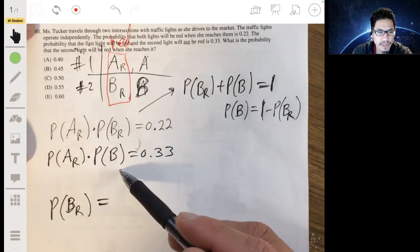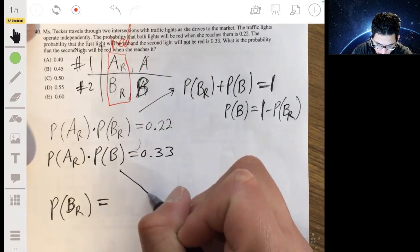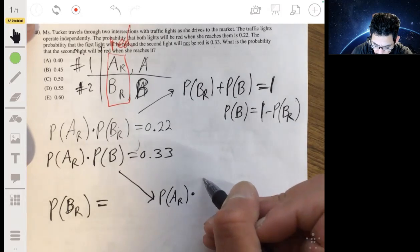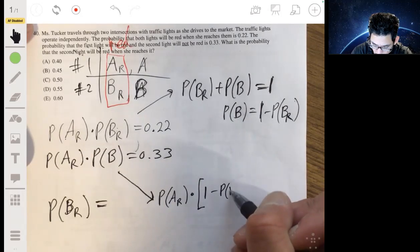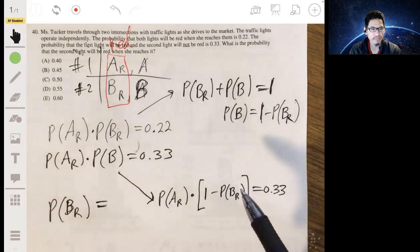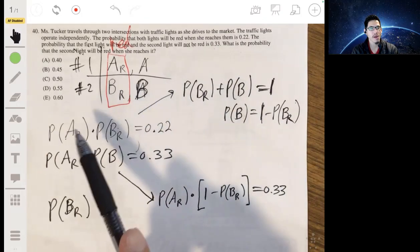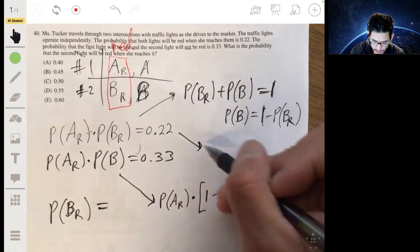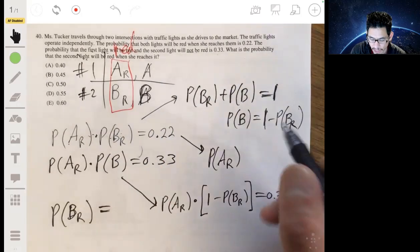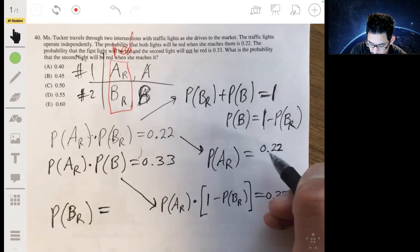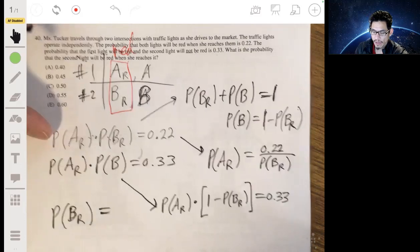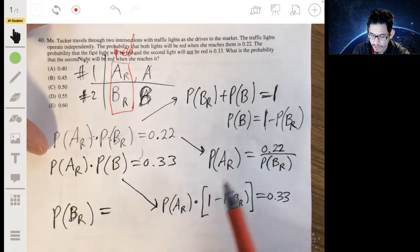And now we can replace the second equation with this. So we'll write the probability of AR times PB, or 1 minus the probability of BR, equals 0.33. Now, if you see here, the probability of AR, or the first light being red, we can solve for that by just dividing both sides by the probability of the second light being red.